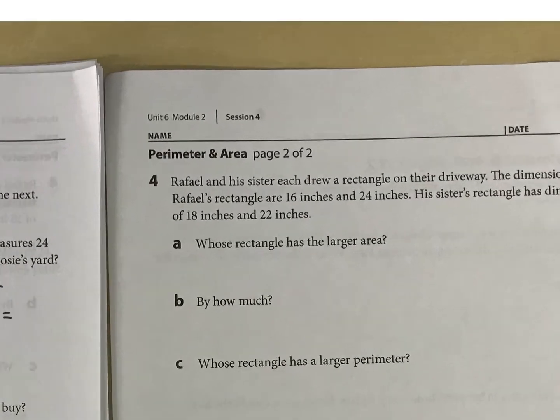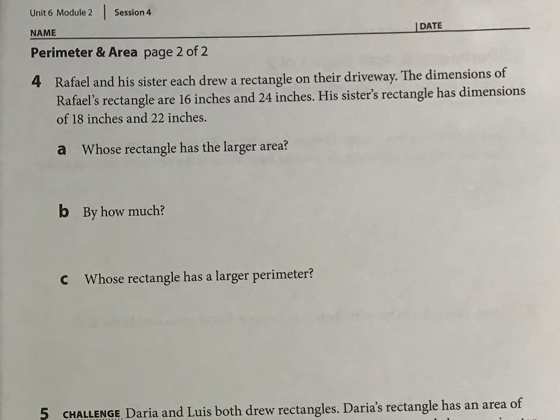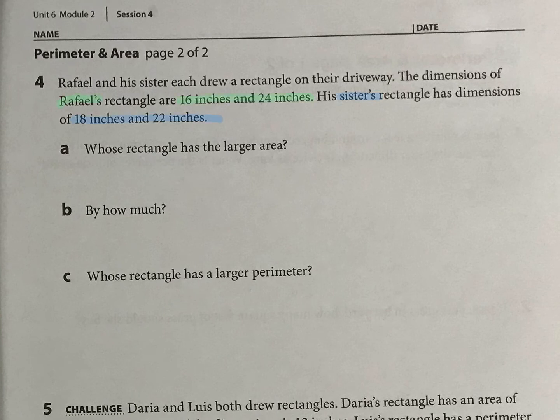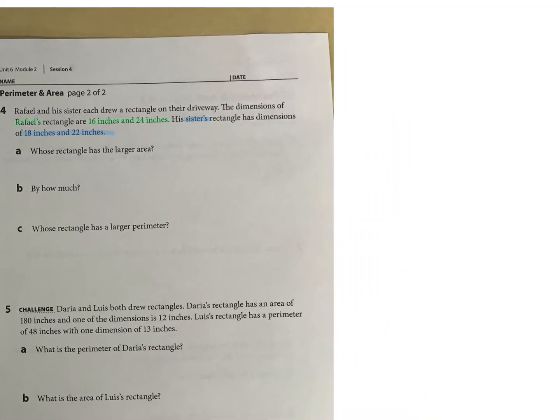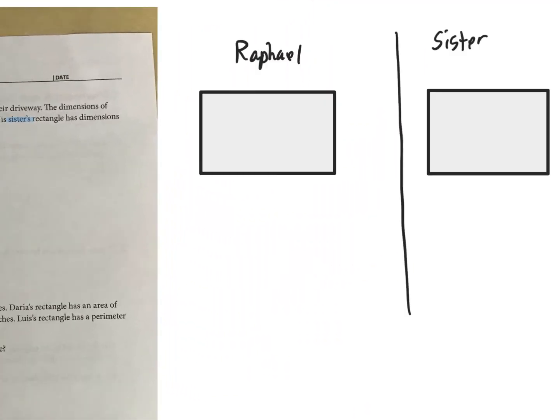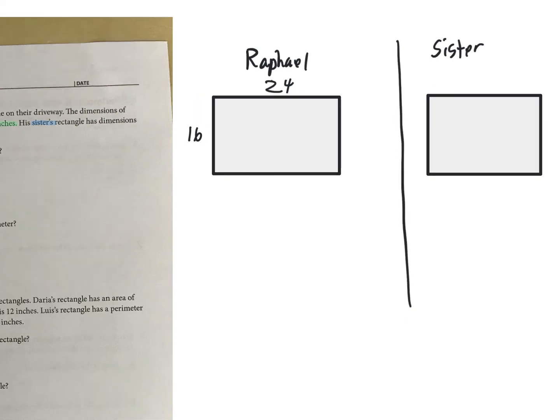And now let's look over here. We have one more page for this one. All right, so what we have here is Raphael and his sister, and they both do rectangles. So Raphael's is 16 by 24, and the sister's is 18 by 22. So who has the larger area, and who has the larger perimeter? I feel like you're almost better off using more paper here if you need to, but I'm going to do it on some extra space. So Raphael's 16 by 24, I think, and his sister is 18 by 22.